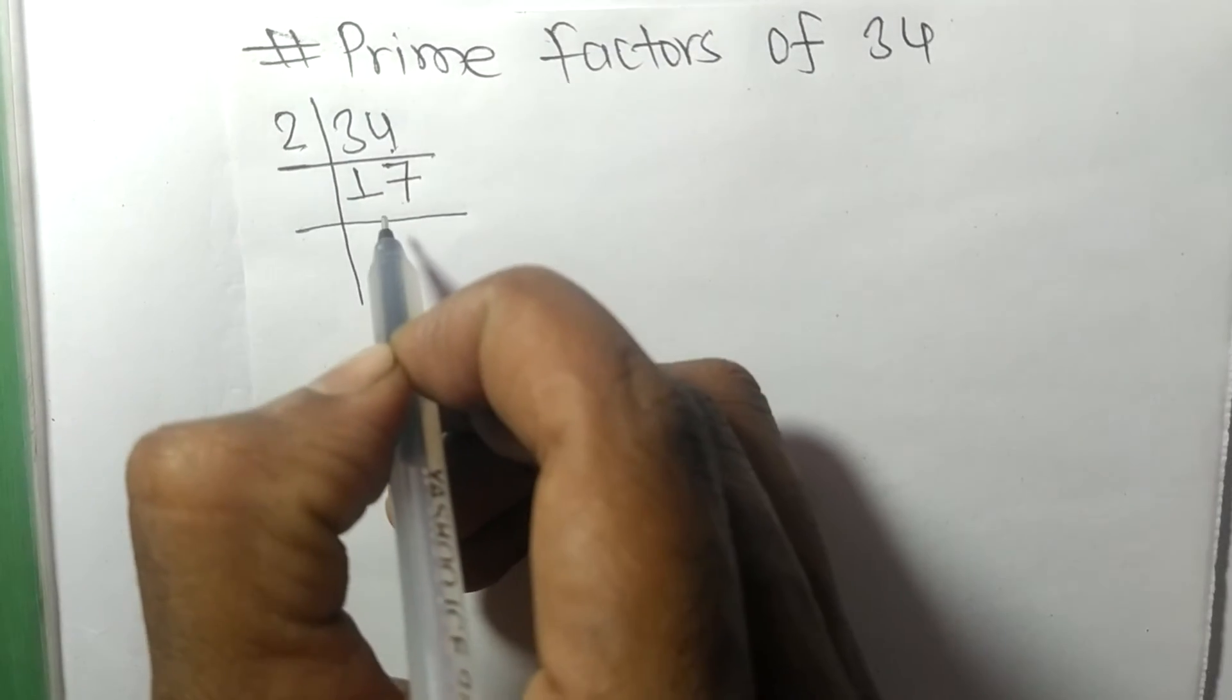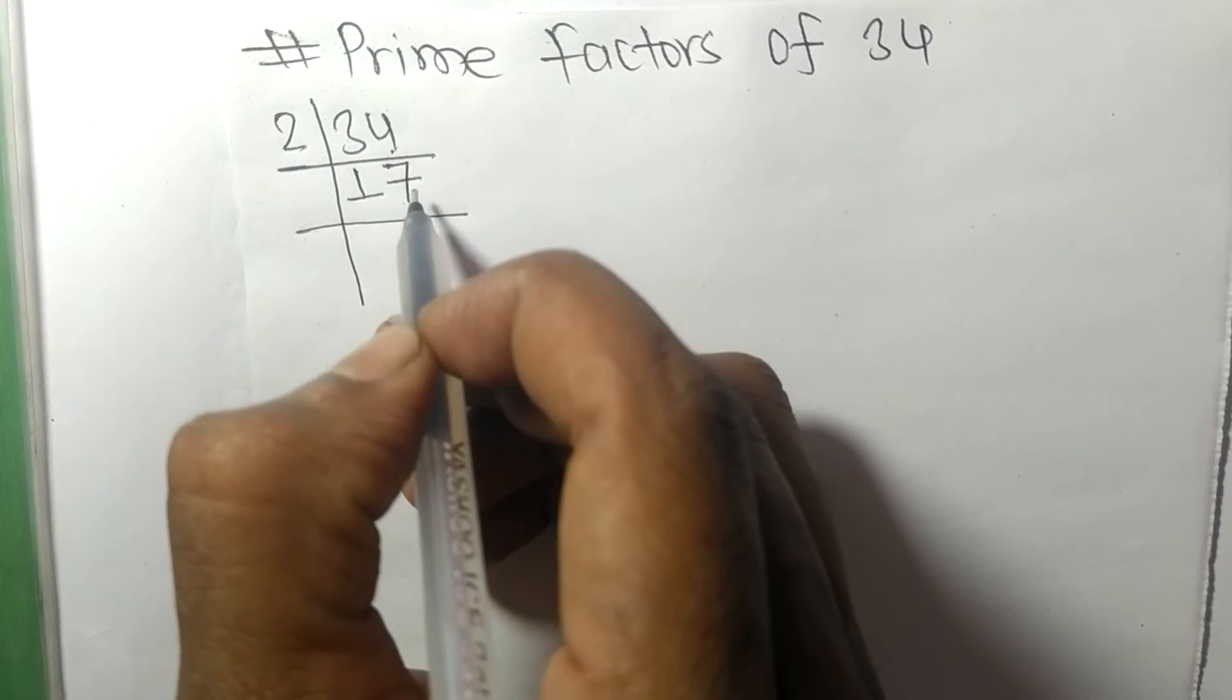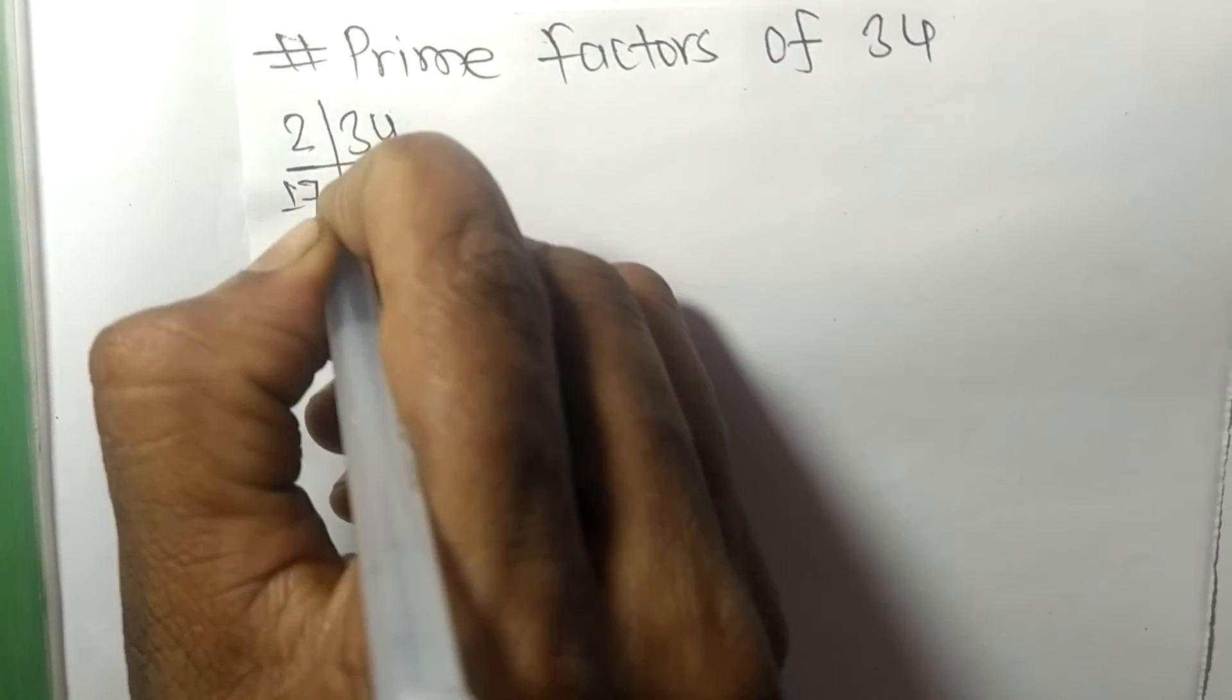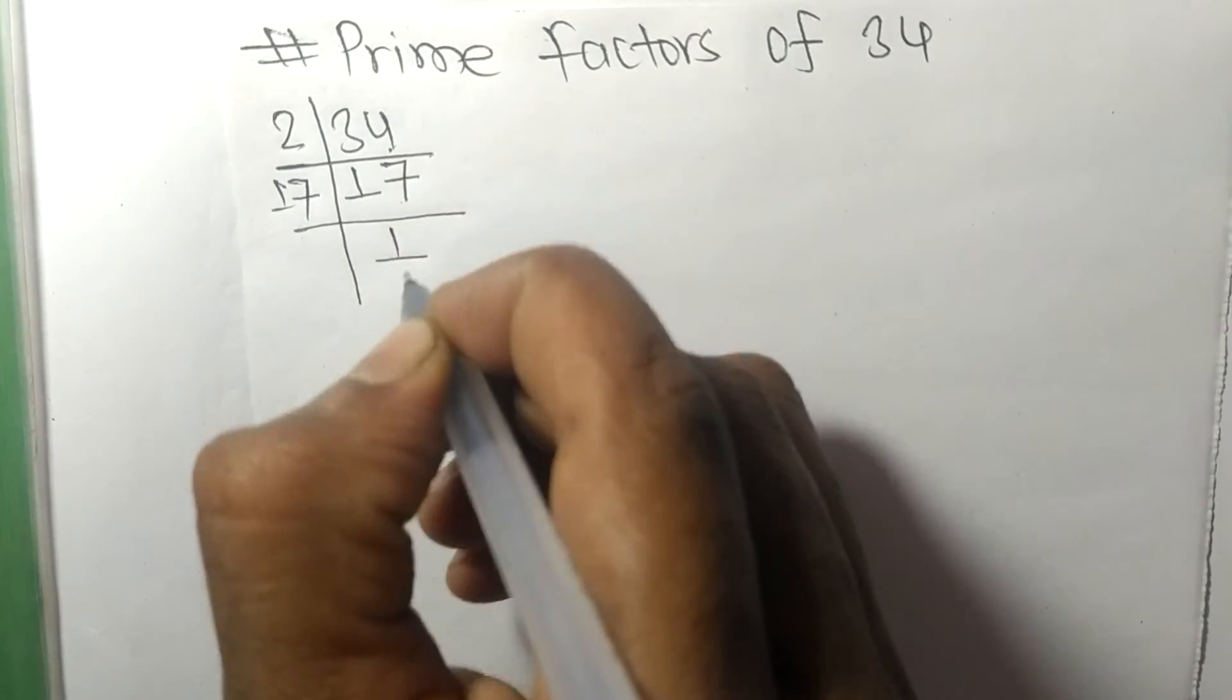Now 17 here is a prime number, so it is divided by itself 17 and we get here 1.